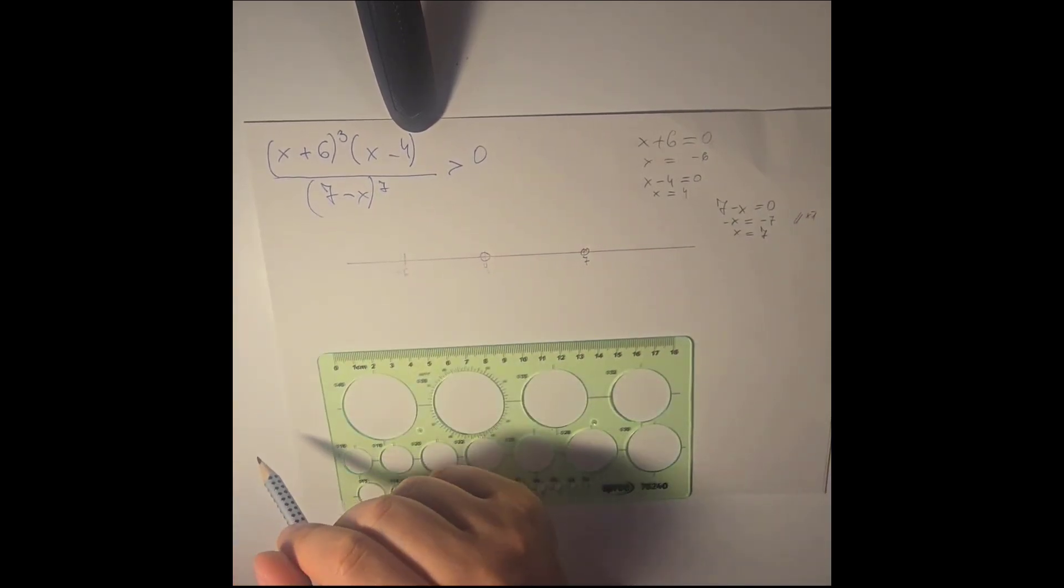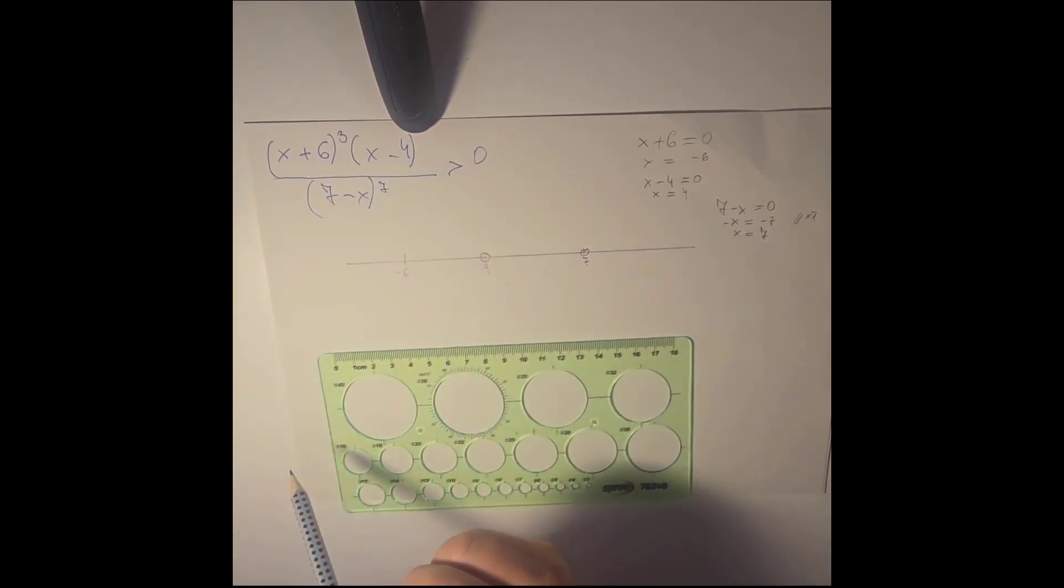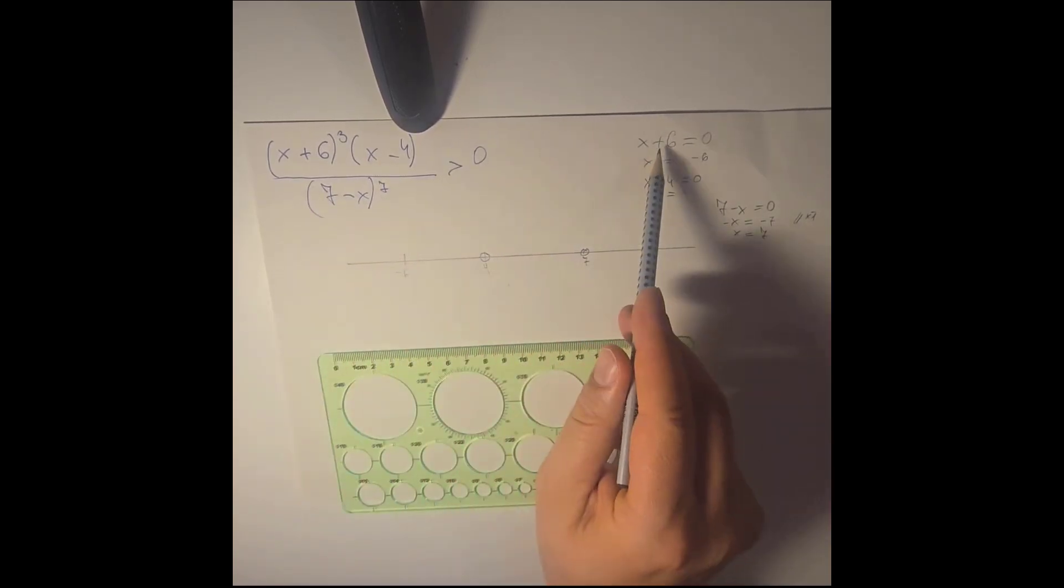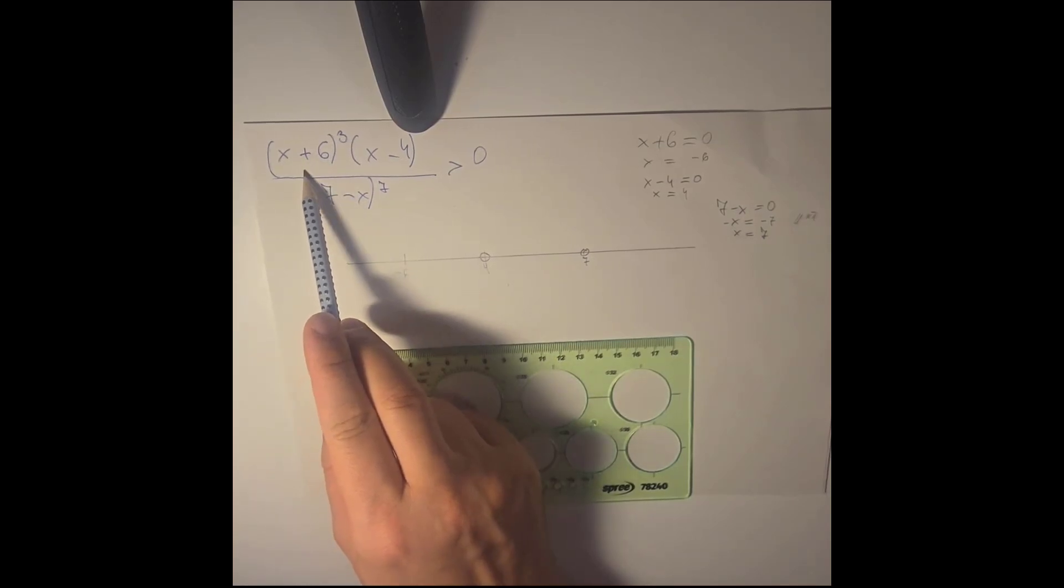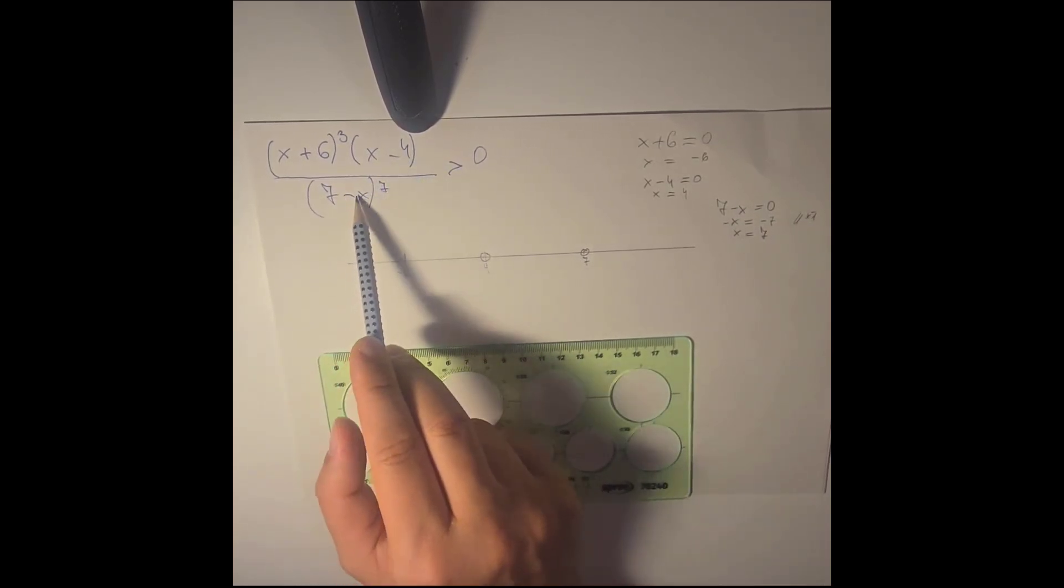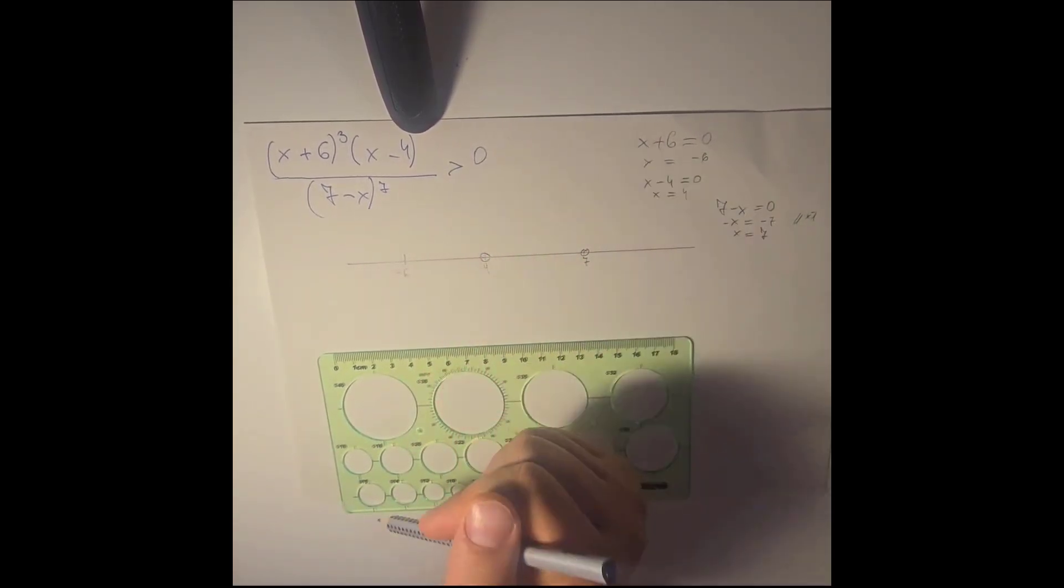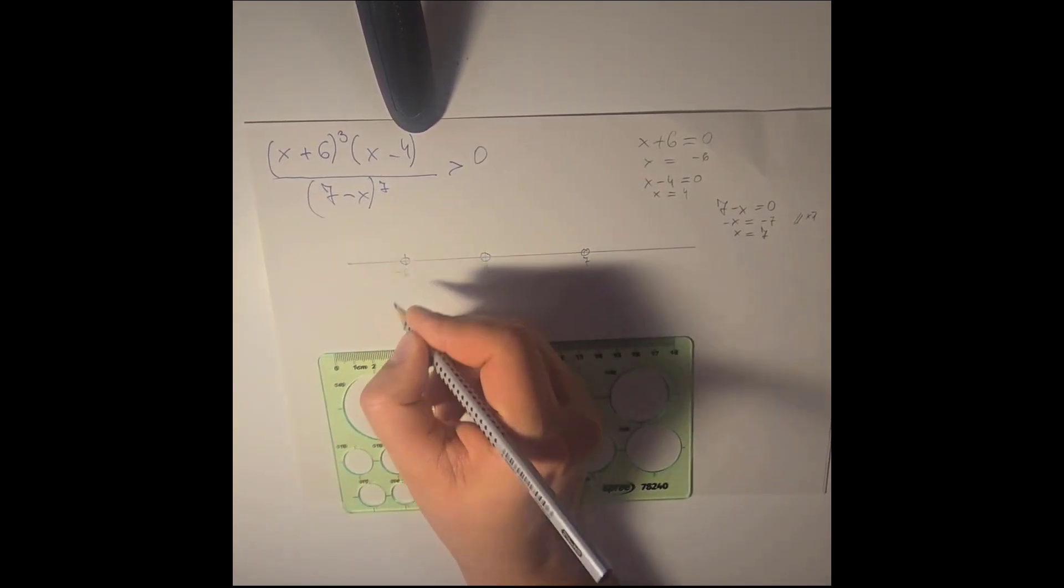And now let's talk about minus 6. Following the same logic as I just explained with the minus 4. If we have minus 6 here, minus 6 and 6 are 0. 0 times something is 0. And 0 divided by anything is 0. And it is bigger than 0, that's false. So the minus 6 cannot be allowed.